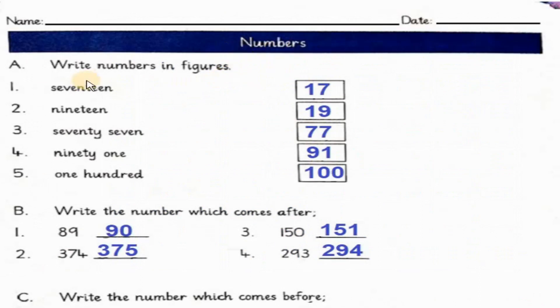पेज़ टू, numbers. आपको words में number दिये गए हैं, उनको आपने figure में लिखना है. Number 1, 17, 17, 17. Number 2, 19, 19, 19. Number 3, 77, 77, 77. Number 4, 91, 91, 91. Number 5, 100. 1, 0, 0 is 100. So, 100.